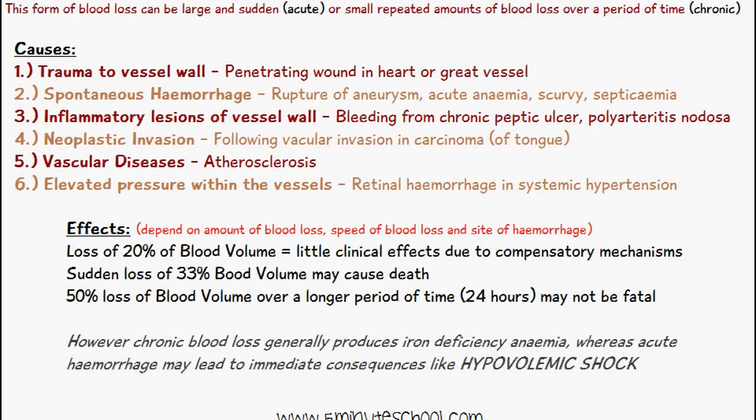Other causes include acute anemia, scurvy, or septicemia. Inflammatory lesions of a vessel wall can be another cause — for example, bleeding from a chronic peptic ulcer or polyarteritis nodosa. Neoplastic invasion is also a cause, such as vascular invasion in carcinoma of the tongue.